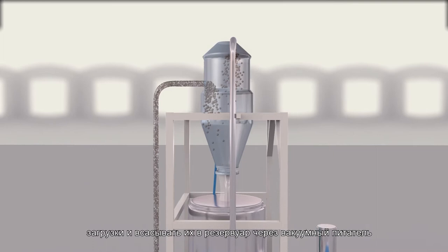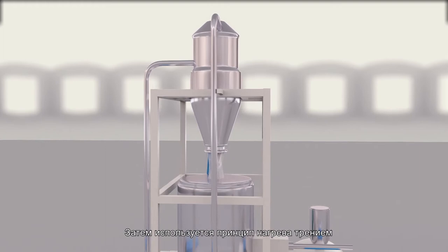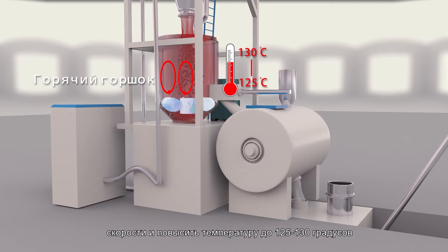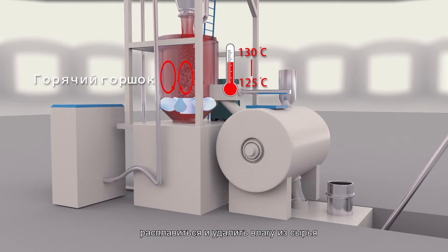Subsequently, the principle of heating up by friction is used to make the raw materials rotate at high speed and raise the temperature from 125 degrees Celsius to 130 degrees Celsius, which will make the processing aids melt and the water vapor be removed from the raw materials.